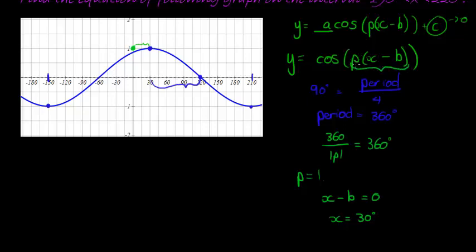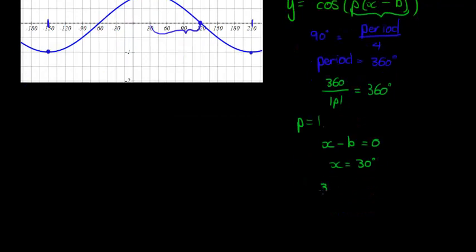Inside here, p is now equal to 1. So all I have inside there is 1x minus b. So in other words, if x is equal to 30, then I've got 30 minus b is equal to 0. So b is equal to 30 degrees.